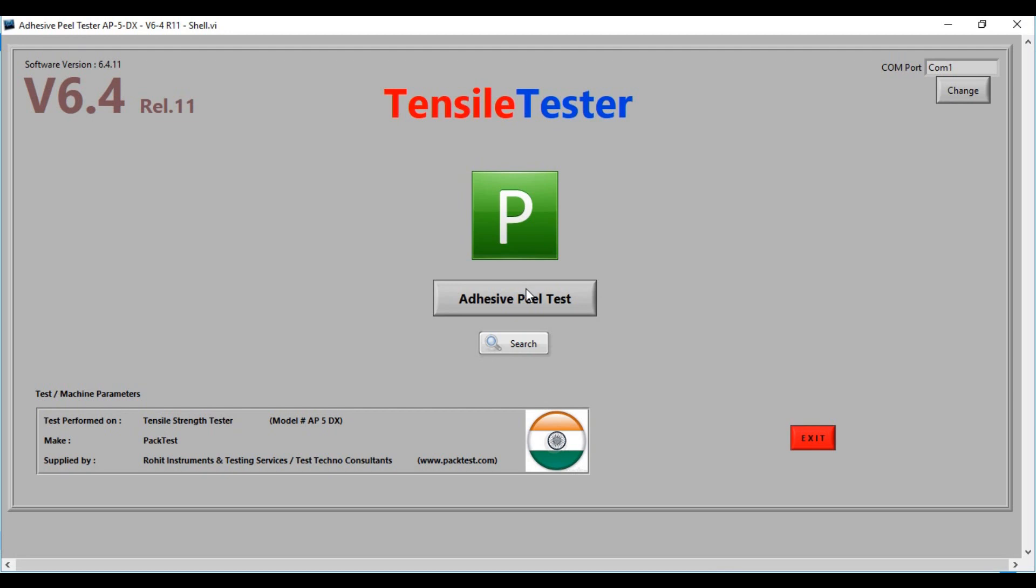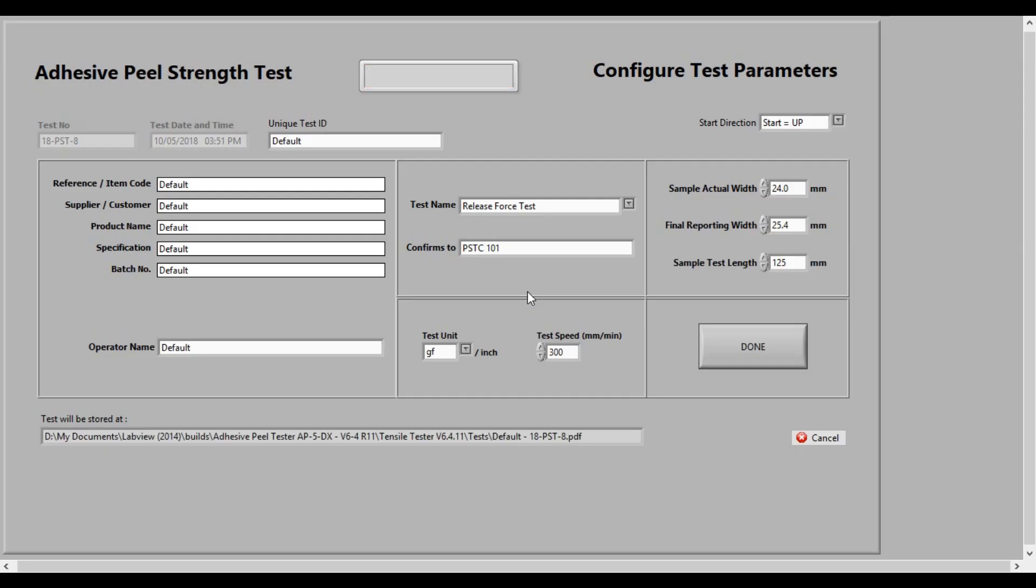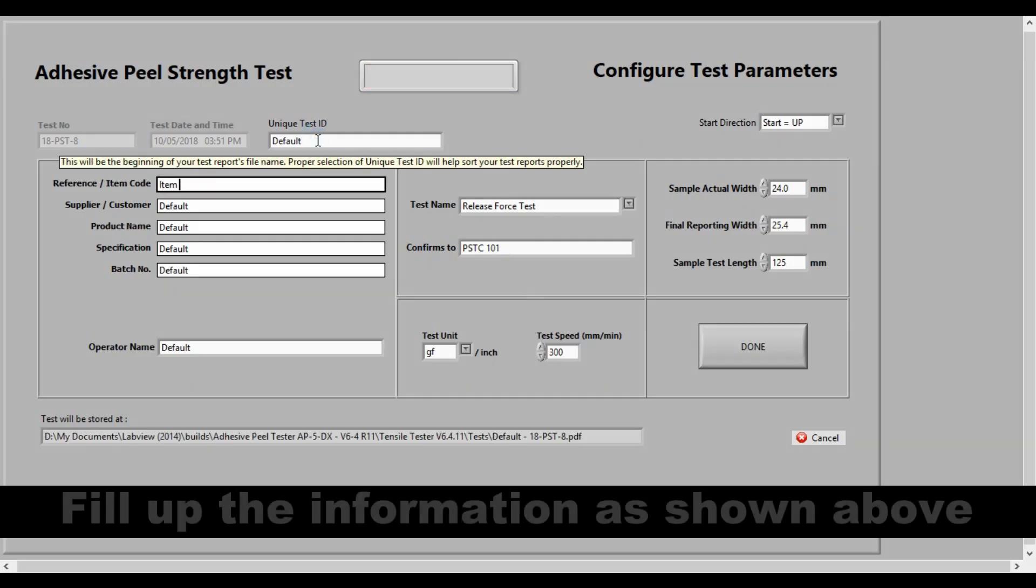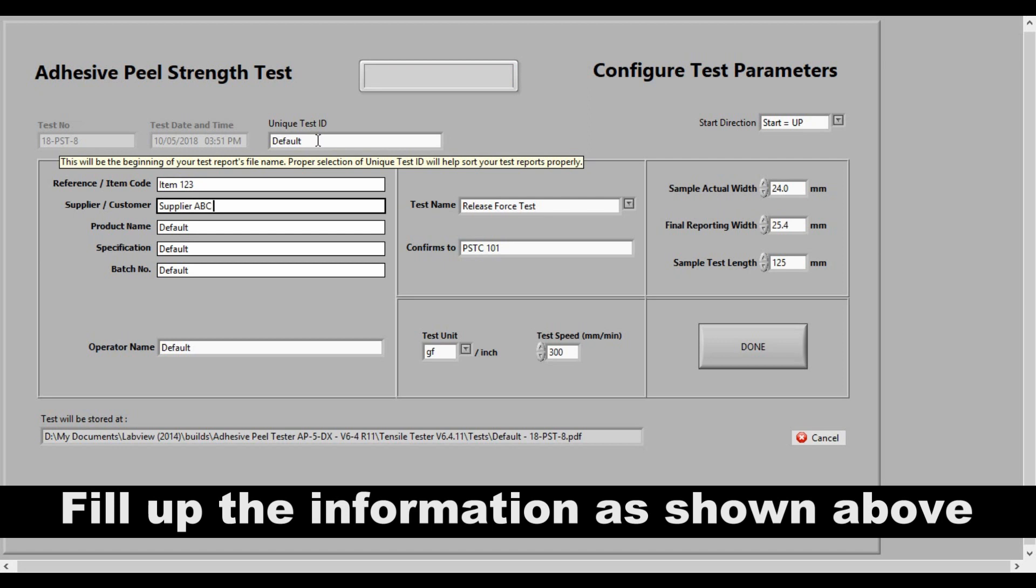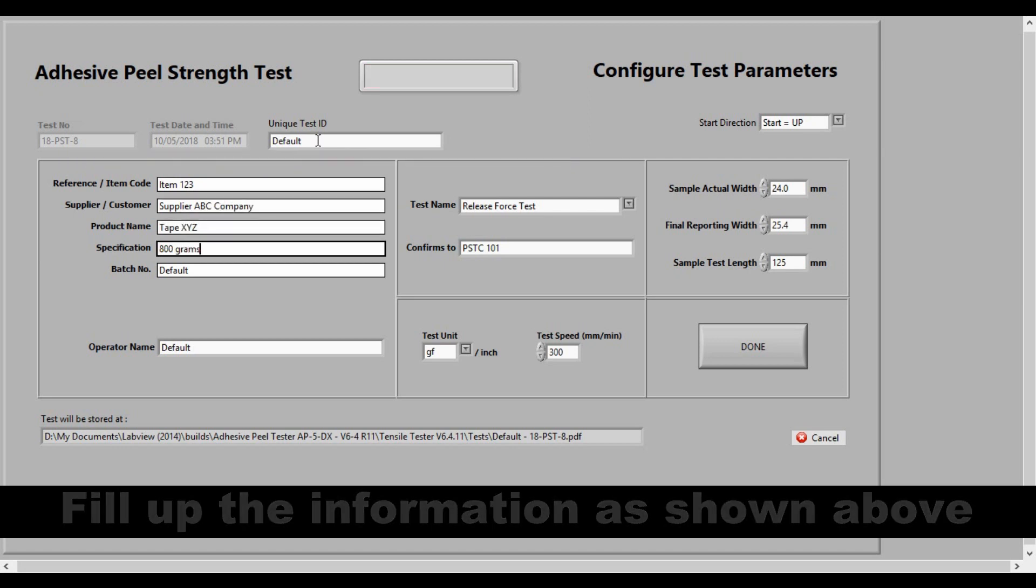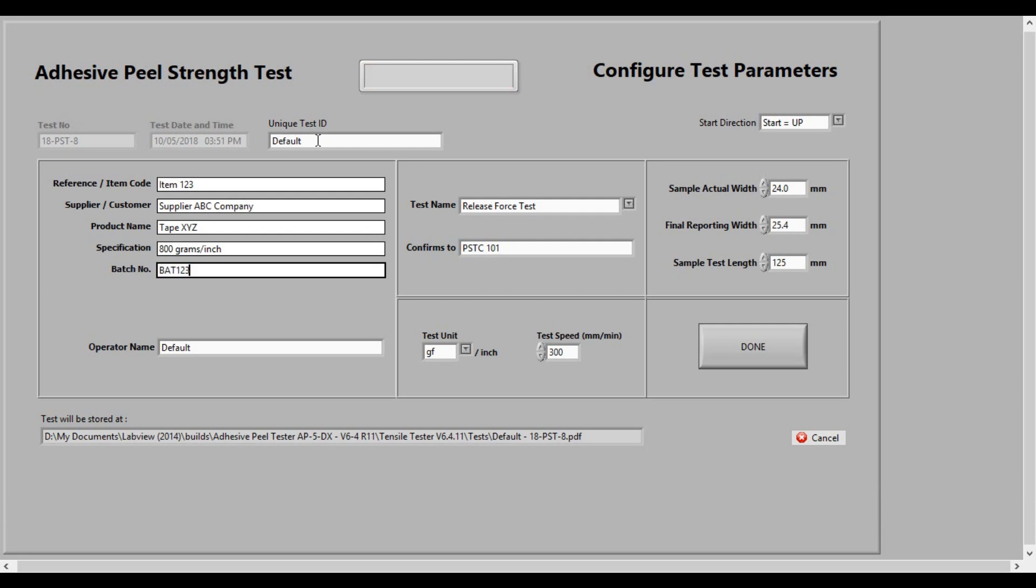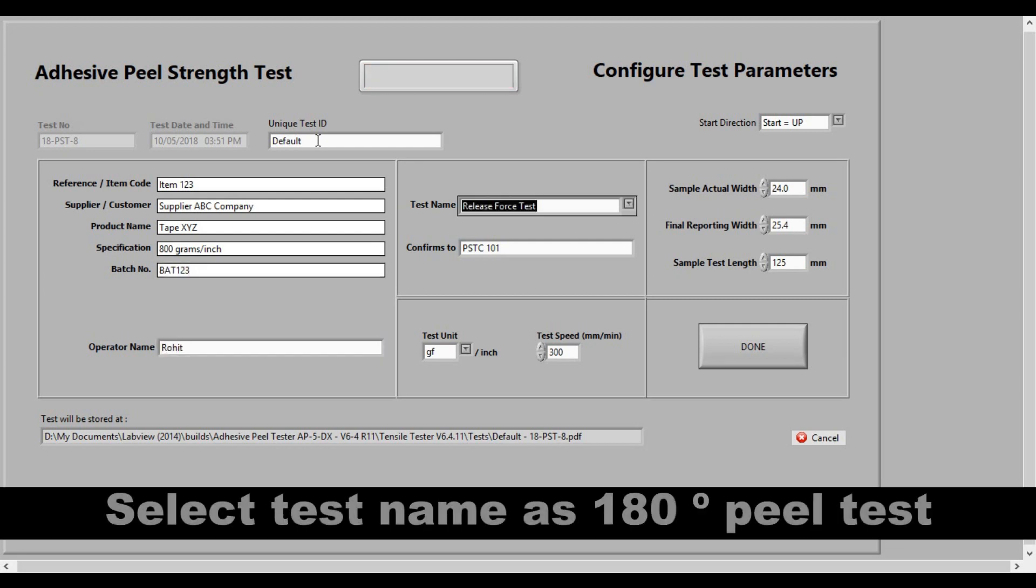Start the software and click on adhesive peel test. Fill up the information as shown above. Select test name as 180 degree peel test.